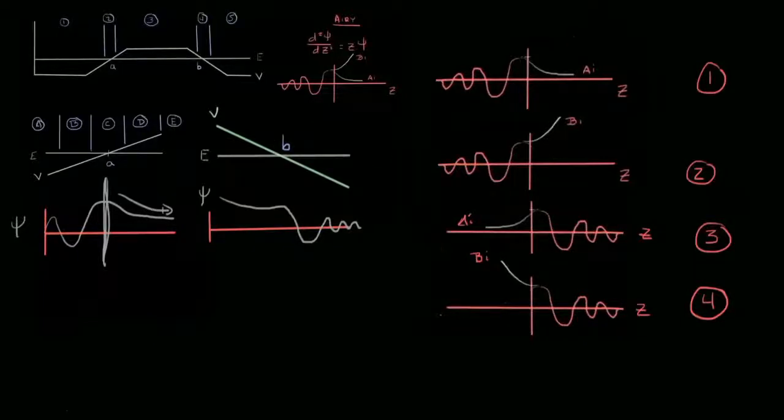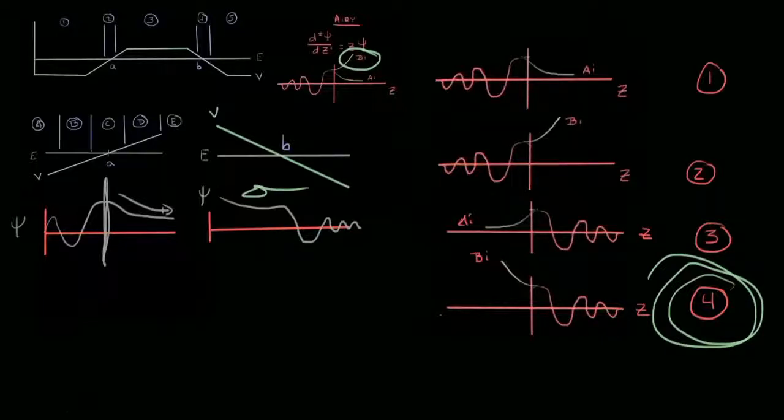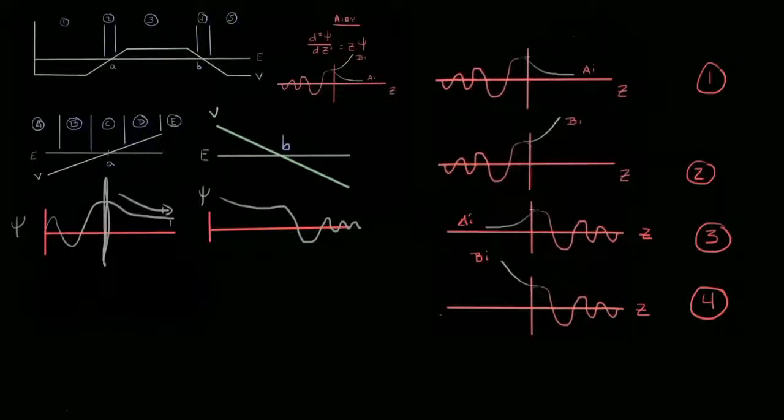Now to identify which form of the ARRI function we're going to look at we simply look to the right at our list of four and the one it looks most like is right here which is a BI ARRI function which we're used to thinking of as exponentially increasing. Likewise anytime we're doing the patch for the WKB approximation we're looking at which ARRI function is most appropriate. This will allow us to know how to best patch with either a sinusoidal or an exponential function.